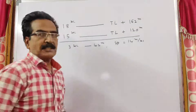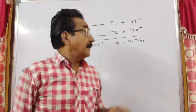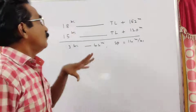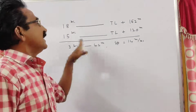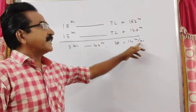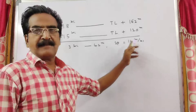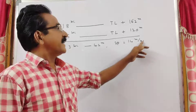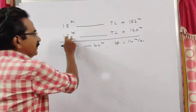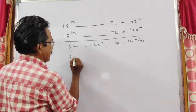So the speed of the train is 14 meters per second. Now we want the length of the train. This train travels 14 meters per second. In 15 seconds, the distance traveled in 15 seconds: